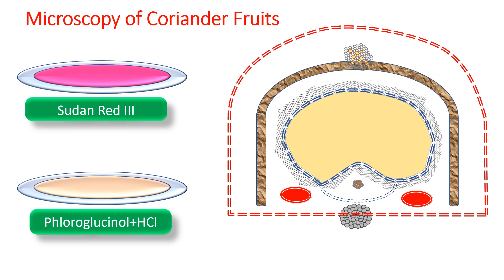If you stain another transverse section with fluoroglucinol HCl, the lignified xylem and phloem appear pinkish in color. You can notice the vascular bundle plus the raphae contain certain lignified xylem, so even those get stained pink. Besides, you may also use picric acid if Sudan Red 3 is unavailable — picric acid gives a yellow color to the oil glands.